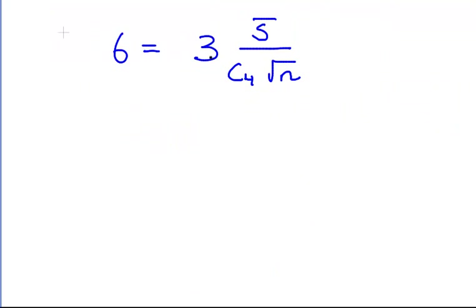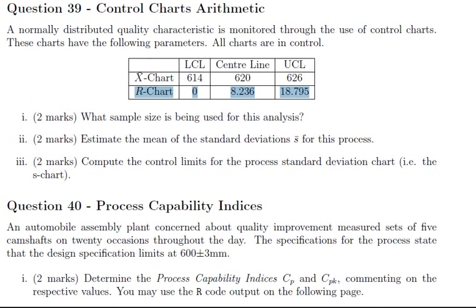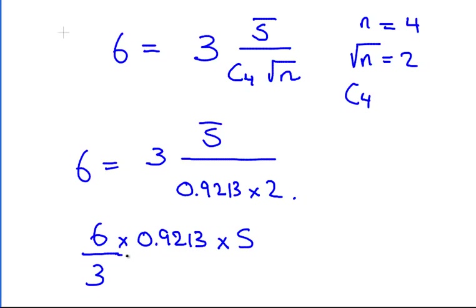So 6 is equal to 3 over S bar divided by C4 over the square root of N. Now remember, square root of N here is 2. C4 is something we get from the tables. We just go along where the batch size is N and just go to the C4 column, which is the first column, 0.9213. So 6 is equal to 3 over S bar times 0.9213 times 2. Or in other words, a little bit of calculation work, 6 divided by 3 times 0.9213 times 2 equals S bar.